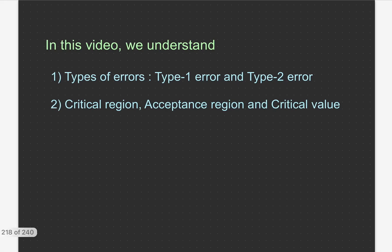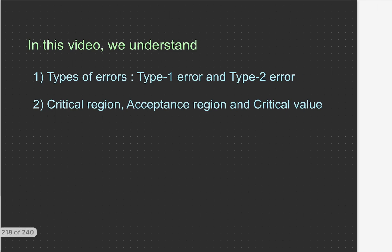In particular, in this video we understand types of errors. There are two types of errors — we call them Type 1 and Type 2. We will see exactly what they are and how to evaluate them with an example. Using the same example we will also understand critical region, acceptance region, and critical value.